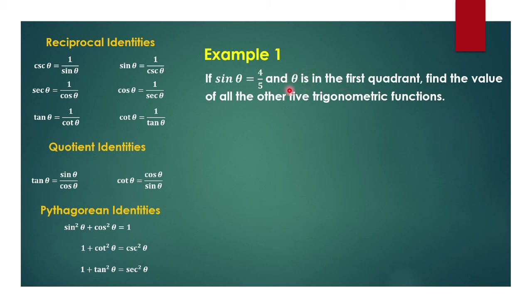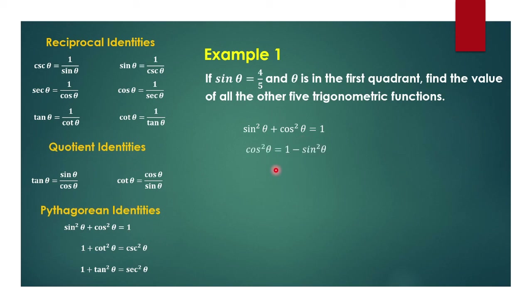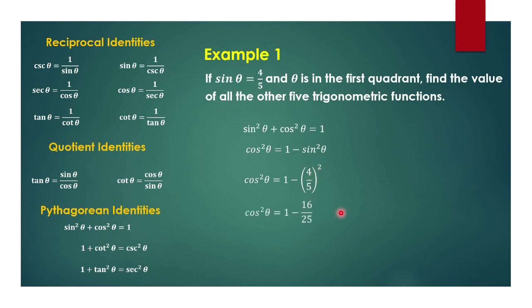Since the angle is in the first quadrant, we should expect that all six trigonometric functions would be positive. Since we know sin theta is 4 over 5, we can use Pythagorean identities to get cosine squared theta. Transposing sine squared theta to the right side of the equation, we have cosine squared theta is equal to 1 minus sine squared theta. Substituting 4 over 5, this gives us 1 minus 16 over 25, which equals 9 over 25.